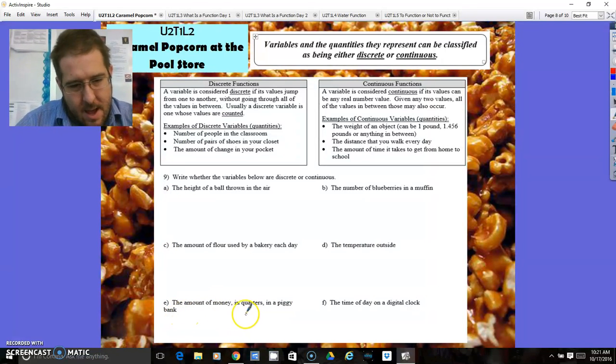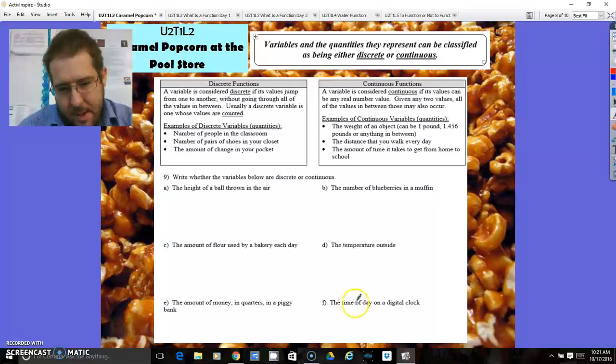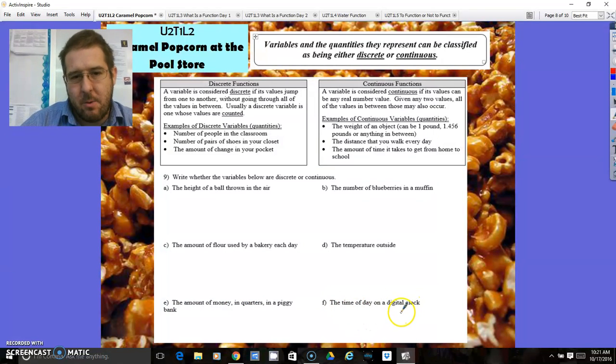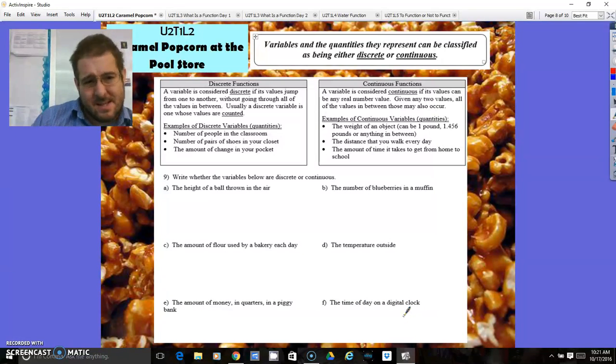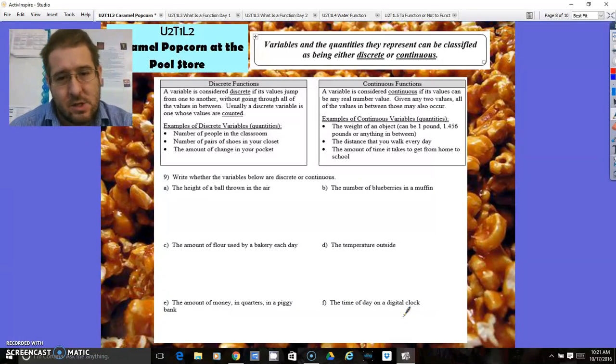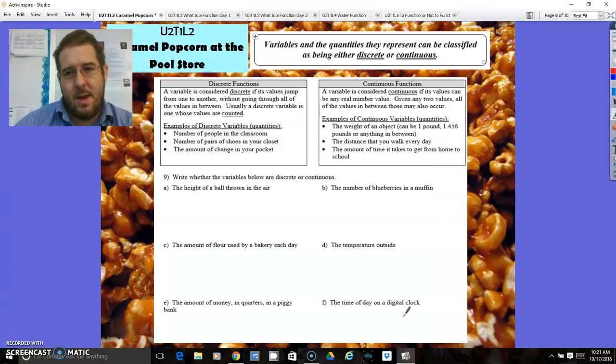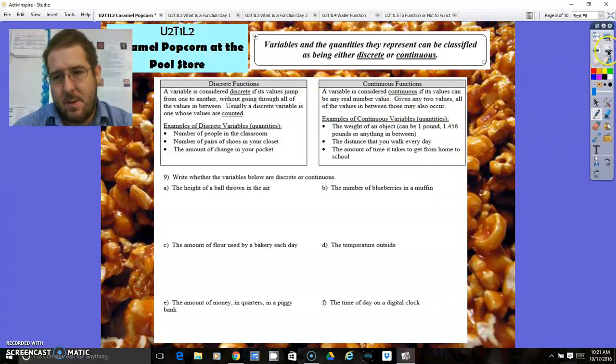The amount of money in quarters in the piggy bank is definitely discrete unless you're cutting up quarters. You can't have half a quarter in a piggy bank. What time of day is a digital clock? A digital clock goes from 12:15 and then it flips to 12:16. Therefore, that is a discrete question. There's no in between. It goes from one minute to the next, and it just flips to the next one.